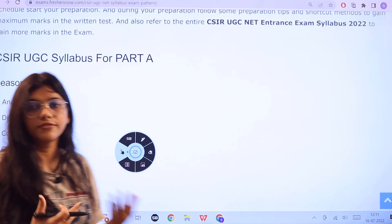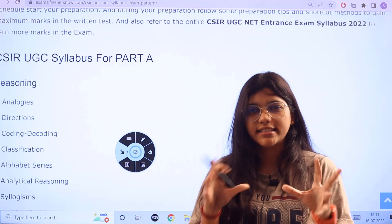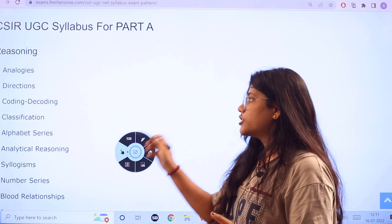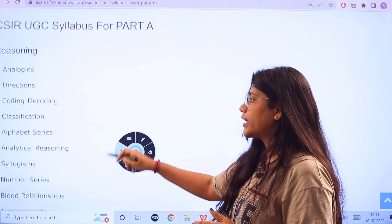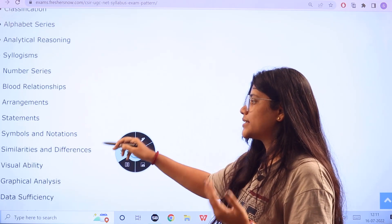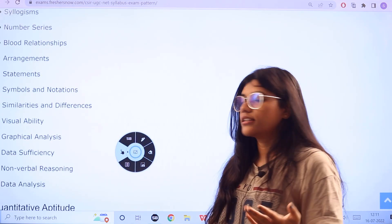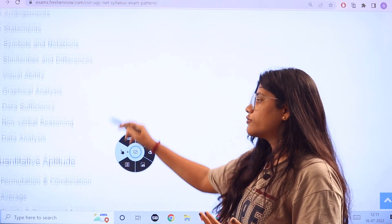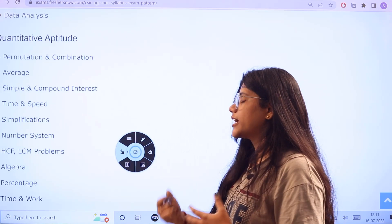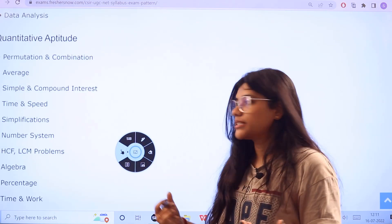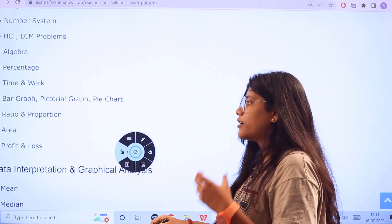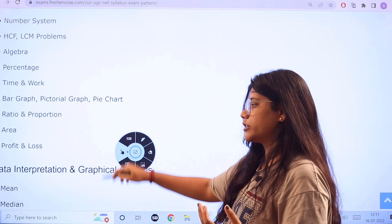Now part A, as we have said, it is a common subject consisting of reasoning type of questions. The topics that you have to consider for preparation are analogies, directions, coding and decoding, classifications, alphabet series, analytical reasoning, number series, blood relations, arrangement statements, similarities and differences, symbols and notations, non-verbal reasoning, data analysis. For quantitative aptitude, you have permutations and combinations, simplifications, number systems, time and speed, HCF and LCM, algebra, percentages, time and work, bar graph, pictorial graph, pie chart, ratio and proportions, profit and loss.